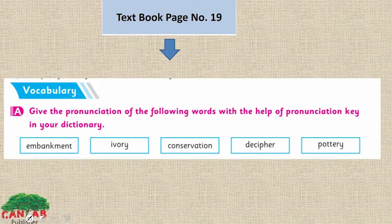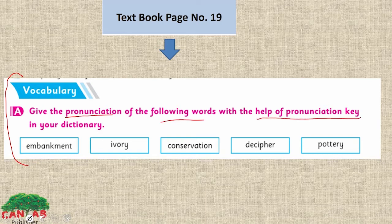Student, look at page number 19. We have a vocabulary section here. It says: give the pronunciation of the following words with the help of the pronunciation key in your dictionary. I hope you are familiar with this procedure — we have discussed this in your previous class too. So how will you find the pronunciation of words with the help of a pronunciation key? Now look at here.